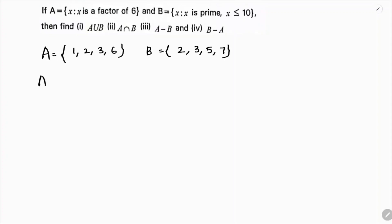First, A union B. A union B is A which is {1, 2, 3, 6} union {2, 3, 5, 7}. We need to write all the elements without repeating the elements in it, like all the elements of A and B. So here 1, 2, 3, if you'll write in ascending order: 1, 2, 3, 5, 6, and 7. This is A union B.